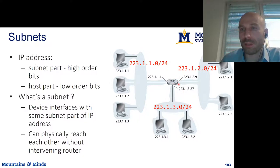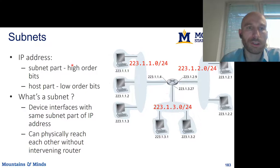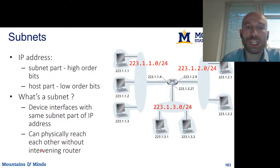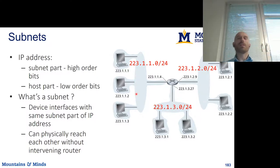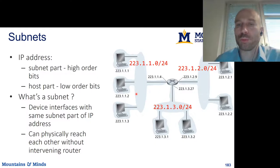For a router, it doesn't have a single IP address like a computer — in this example it has three IP addresses, one attached to each of its interfaces. A subnet is basically a set of device interfaces that share a part of an IP address and can reach each other without an intervening router. Even though addresses here and here all start with 223, they're not part of the same subnet because they can only communicate through a router.